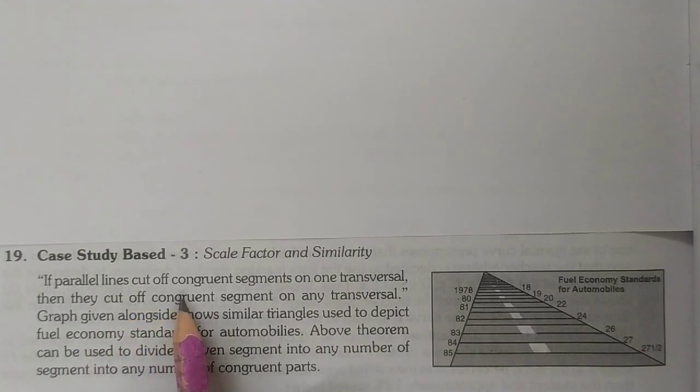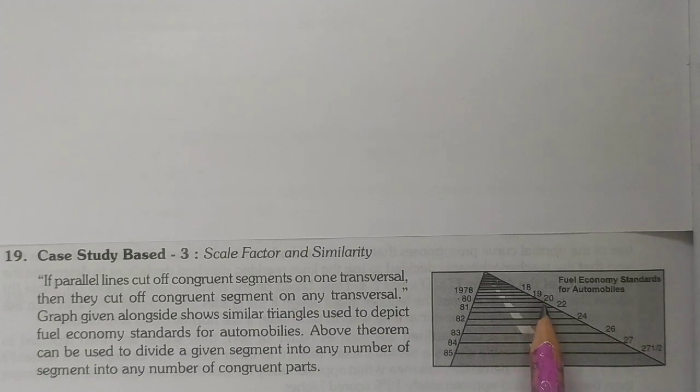If parallel lines cut off congruent segments on one transversal, then they cut off congruent segments on any transversal. Here these are parallel lines. Suppose these parallel lines are cutting congruent segments on this transversal, and these all segments are equal. Then these parallel lines will cut off congruent segments with all transversals.